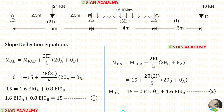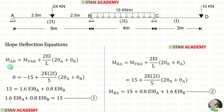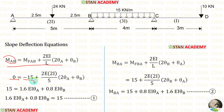Now let us make the slope deflection equations for span AB. We apply the fixed end moments, a length of 5 meters for AB, and a moment of inertia of 2i. Using the first equilibrium equation where MAB equals 0, we move minus 15 to the left side where it becomes positive. This gives us our first equilibrium equation.